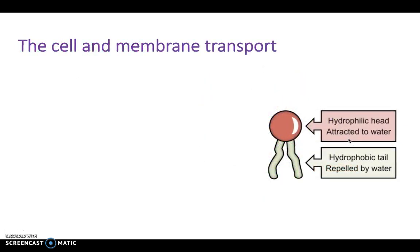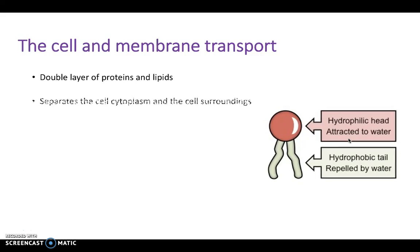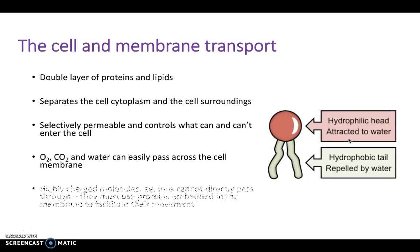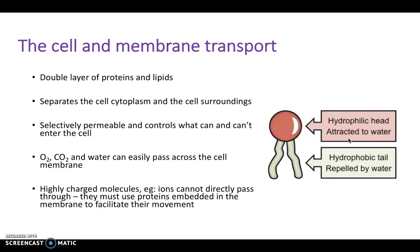Next we look at the cell and membrane transport. The membrane is a double layer of proteins and lipids, and it separates the cytoplasm of the cell from its surroundings. It is selectively permeable and controls what can and can't enter the cell. Oxygen, CO2, and water can easily pass across the cell membrane. But highly charged molecules, such as ions, cannot directly pass through and must use proteins embedded in the membrane to facilitate their movement. We've just learned how to make a protein through protein synthesis, and now we'll use them in the membrane to transport things across.